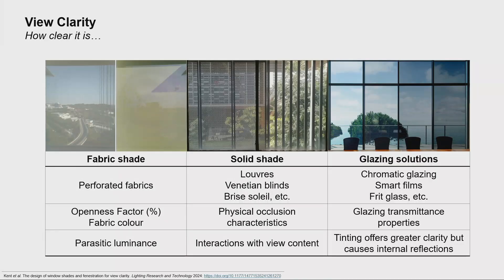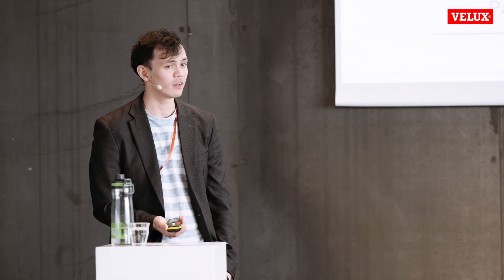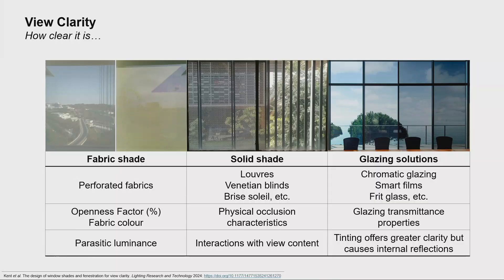Solid shades encompass a wider variety, ranging from louvers, Venetian blinds, and brise-soleil. Here, view clarity depends on the physical occlusion characteristics such as shape, size, pattern, and color. The challenge with solid shades and view clarity is how these things interact with the view content. Because of the wide variety of solid shades, they can fracture the view or cause visual camouflaging effects, making it very difficult to have an all-inclusive metric that categorizes solid shades in terms of view clarity.